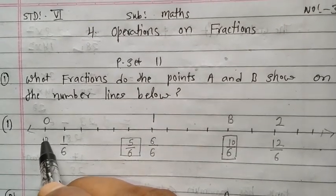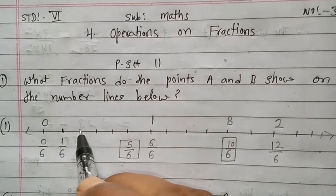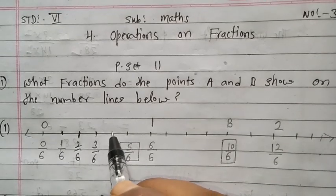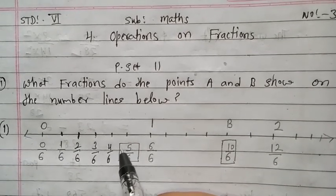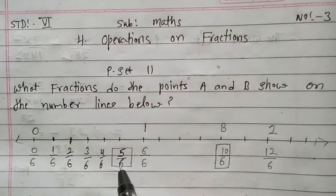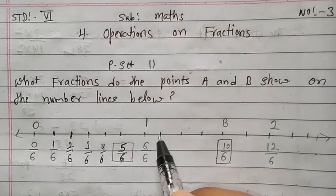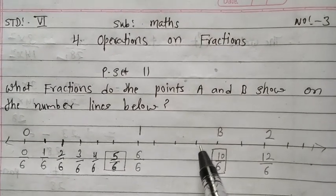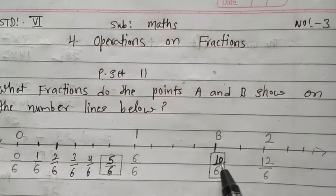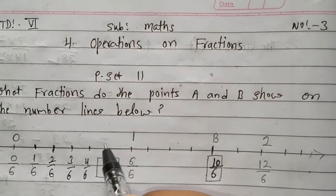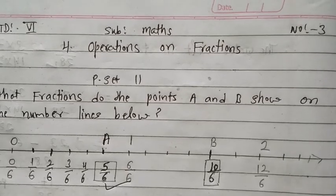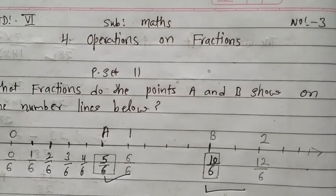So count: here is given 0 upon 6, so this one is 1 upon 6, second is 2 upon 6, third is 3 upon 6, next 4 upon 6. After 4, what comes? 5 upon 6. Next, 6 upon 6 is given, afterwards 7 upon 6, 8 upon 6, 9 upon 6. B is at 10 upon 6. So point A is located at 5 upon 6 and point B is located at 10 upon 6.